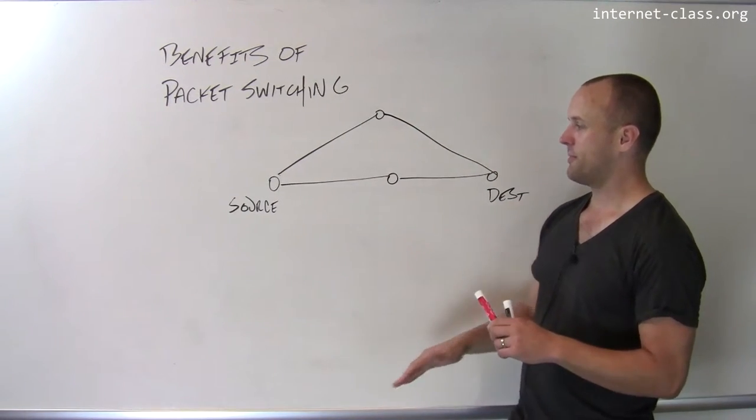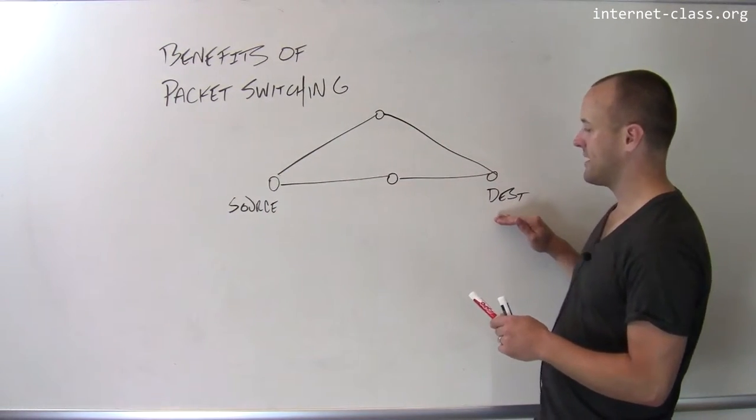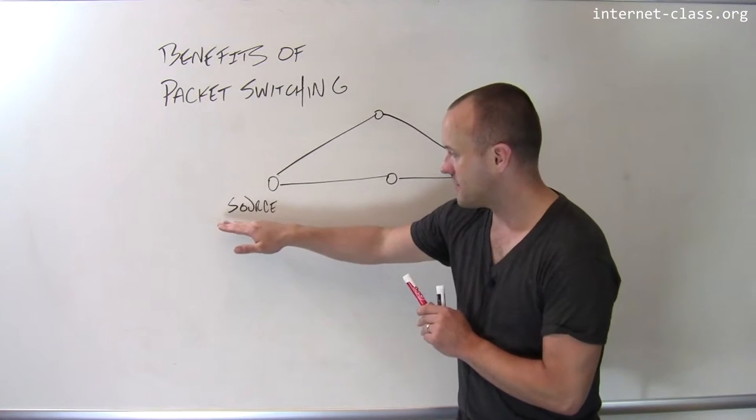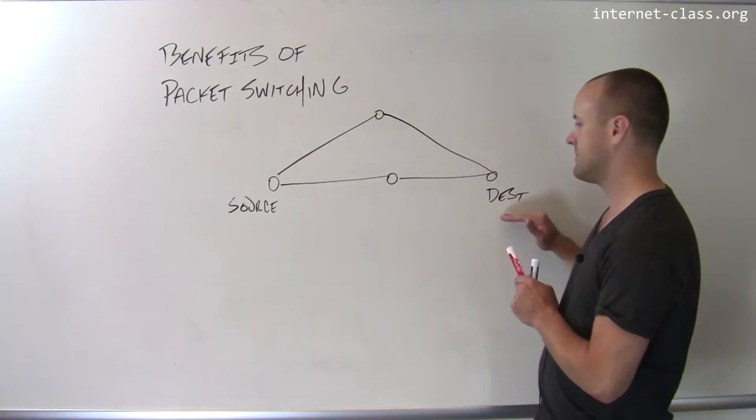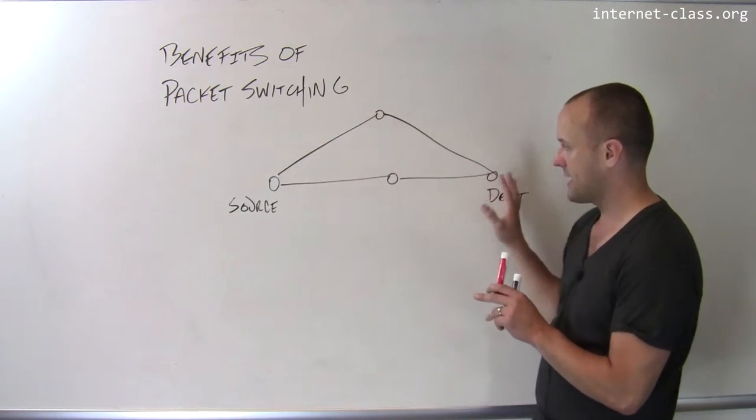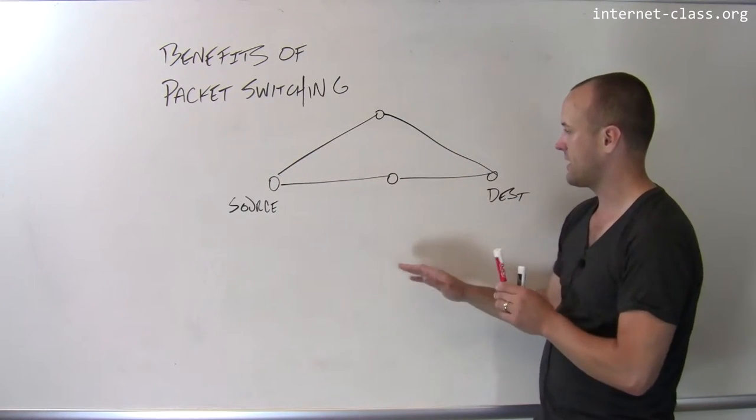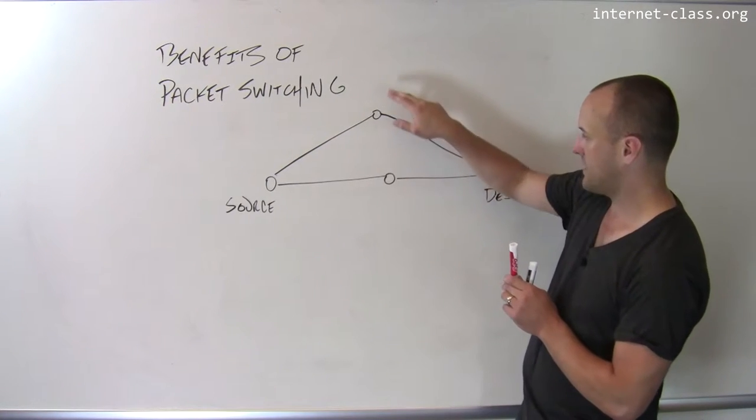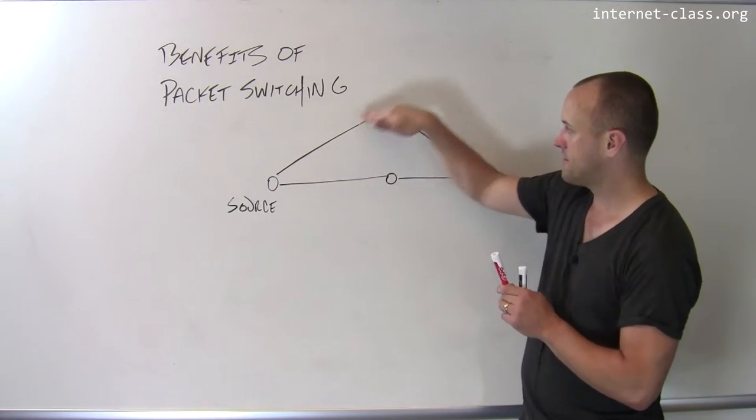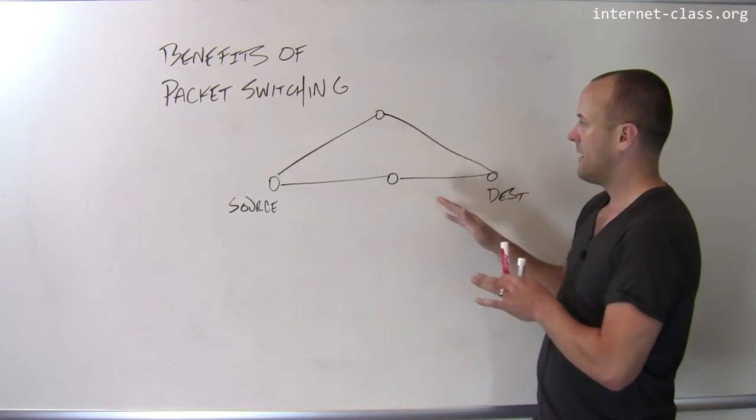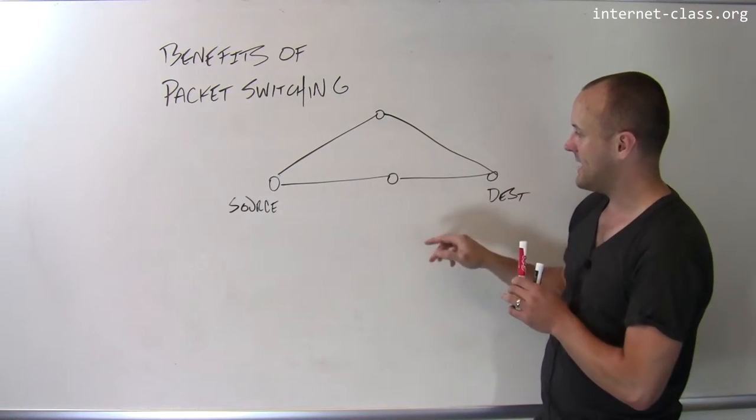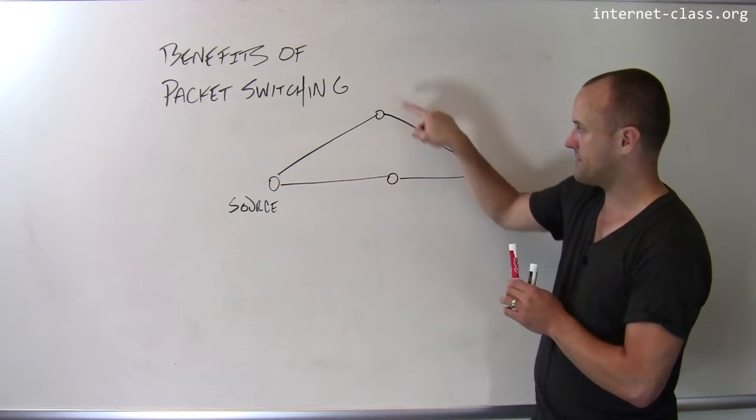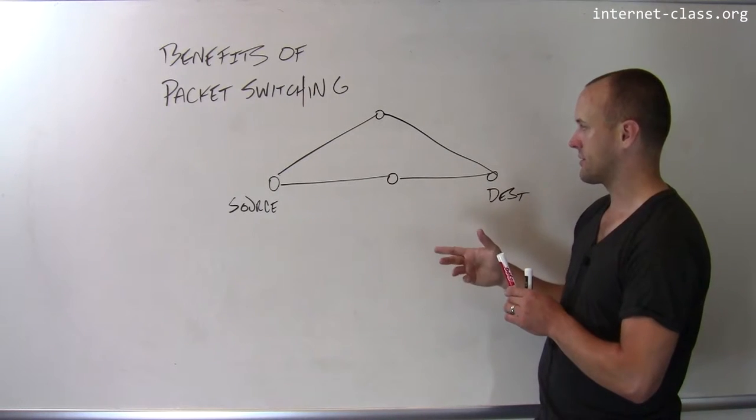So let me walk through a simple example. I have a source and a destination and I want to send some data from the source to the destination. And here's my very simple network, pretty simple network topology. I've got my source, my destination, and there are two routes, sort of physical wired connections that the data can take that go through a couple of different other computers.